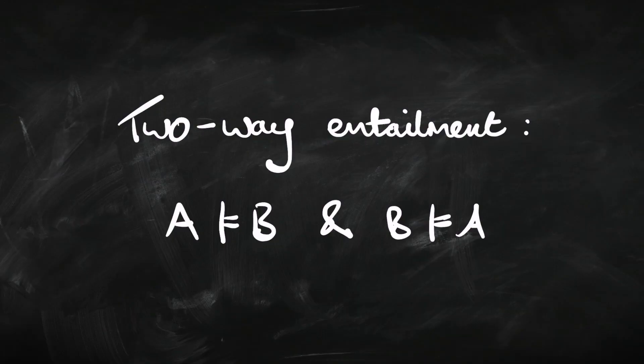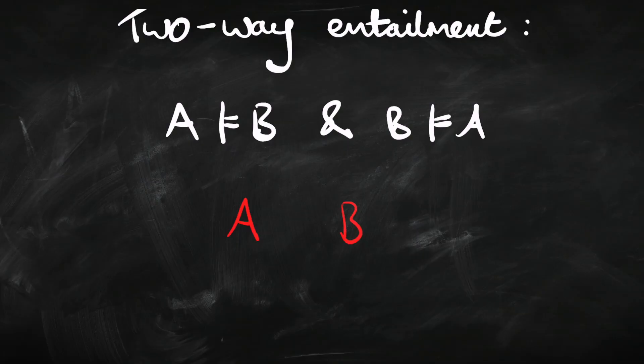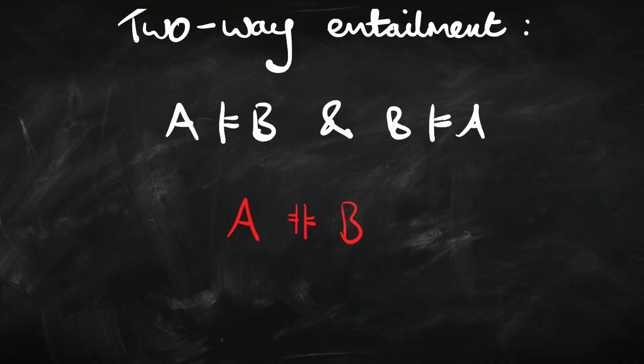Because we've already defined entailment, it's really easy for us to now define equivalence. It's simply two-way entailment. So when we have two sentences, A and B, they are equivalent just in case A entails B and also B entails A. It's good to have a symbol as a shorthand for writing down that A and B are equivalent. Some logicians use the three bars symbol. I'm going to use the entailment symbol forwards and backwards to denote equivalence.